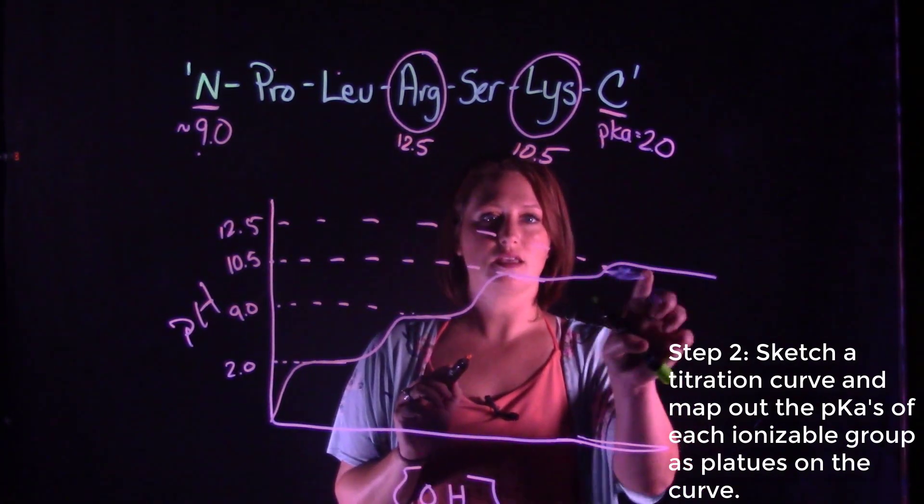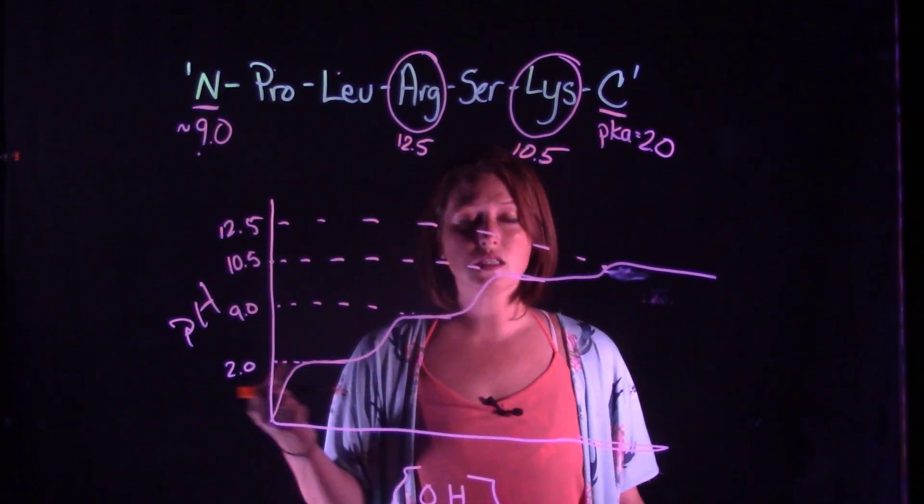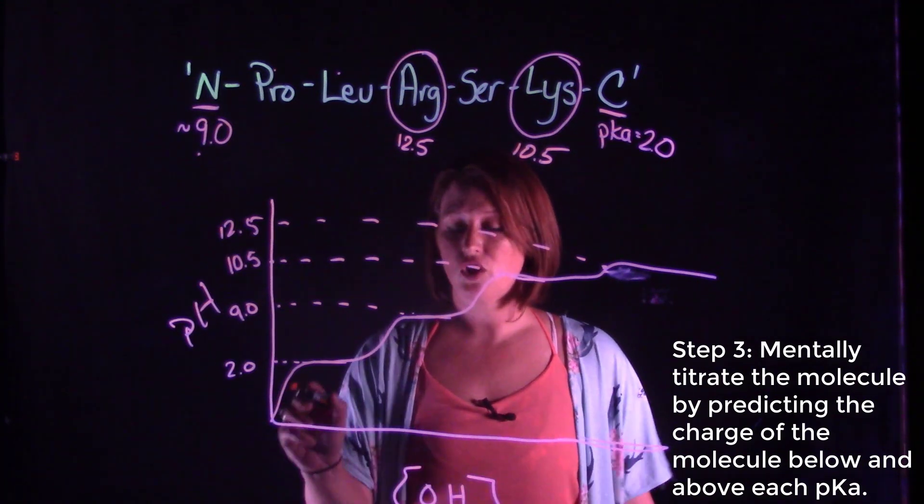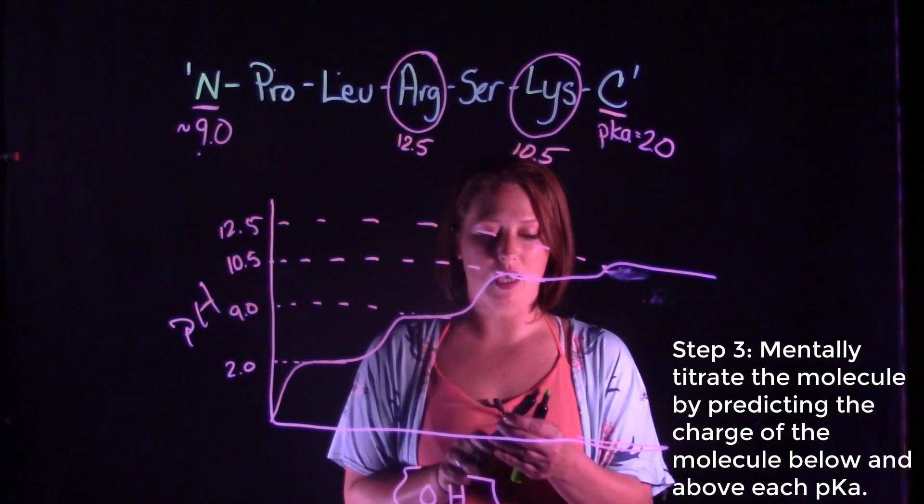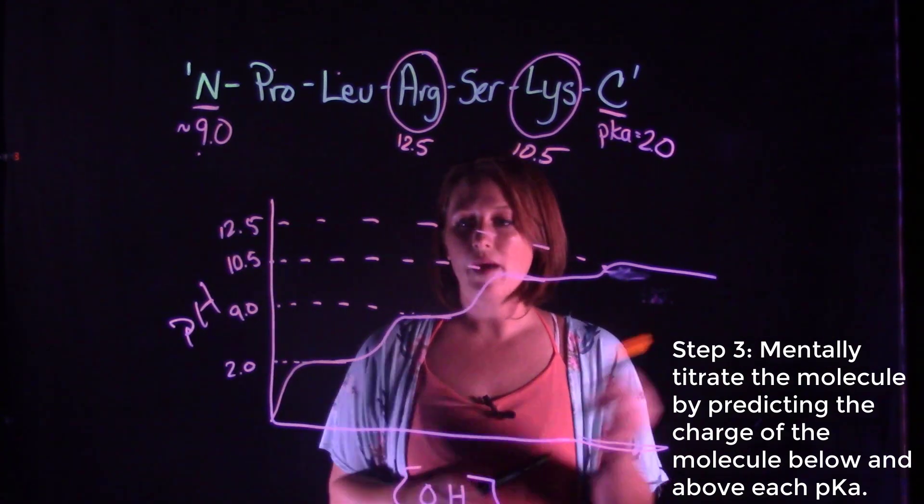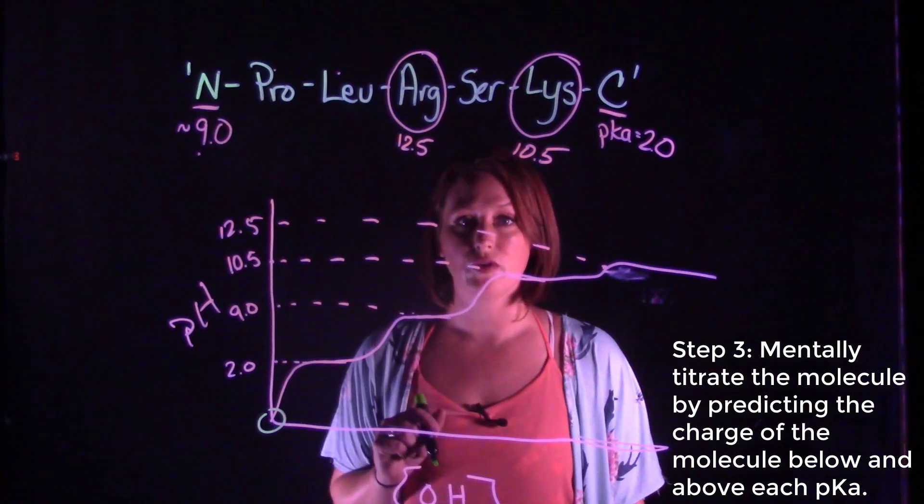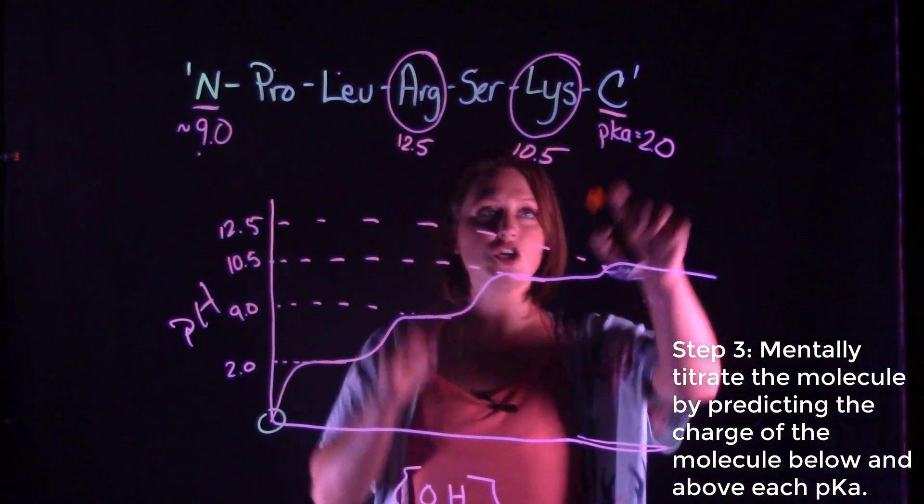Okay, so now the next step, step three, is to mentally titrate our polypeptide in order to determine the charge state below and above each of the pKa's. To do that, I'm going to start very acidic where everything should be protonated.